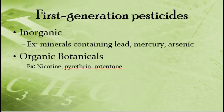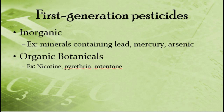We also have two other categories: first generation and second generation pesticides. First generation pesticides were the first used by humans and are not synthetic. They fall into two groups: inorganic, which are minerals containing heavy metals like lead, mercury, and arsenic that kill certain pests but cause environmental and human health damage; and organic botanicals such as nicotine and pyrethrin, derived from plants that have naturally evolved compounds poisonous to insects. We harvest these botanicals to kill insects.